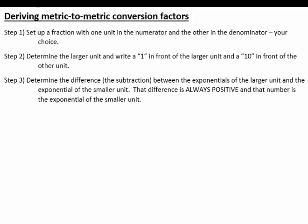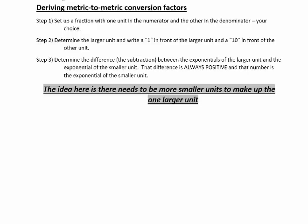Now I'll show you the steps for deriving metric to metric conversion factors using a table of exponentials. Step 1: Set up a fraction with one unit in the numerator and the other unit in the denominator — it doesn't matter which. Step 2: Write a 1 in front of the larger unit and a 10 in front of the smaller unit. Step 3: Determine the difference between the exponentials of the larger and smaller units — this difference is always positive and is the exponent of the smaller unit.